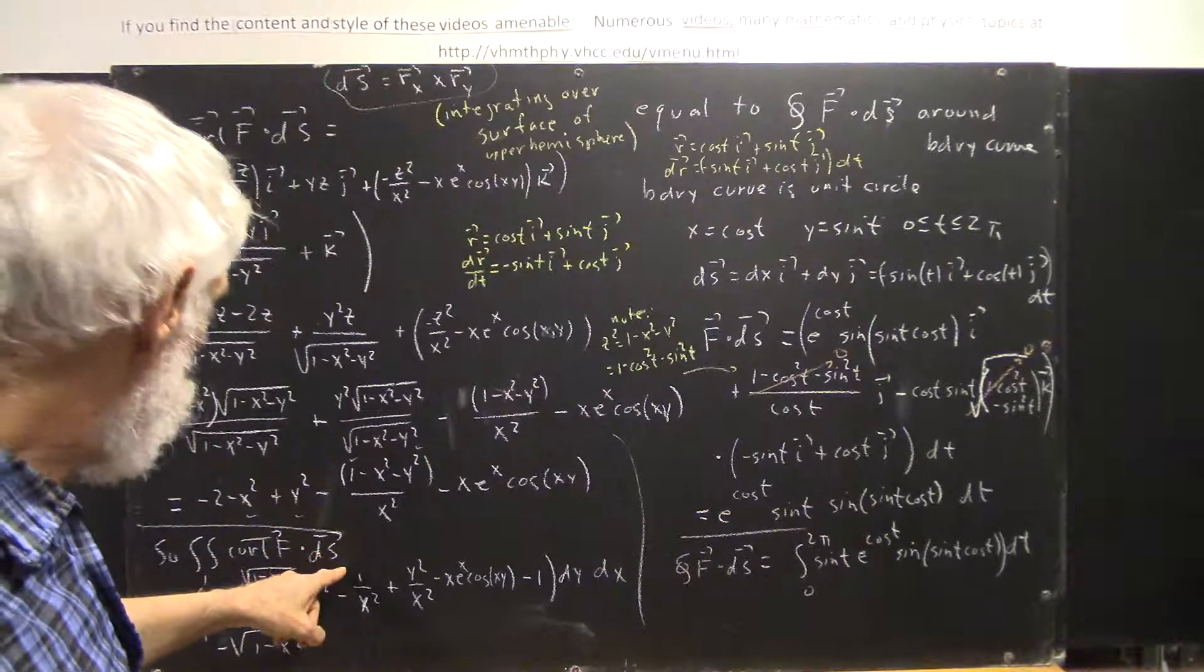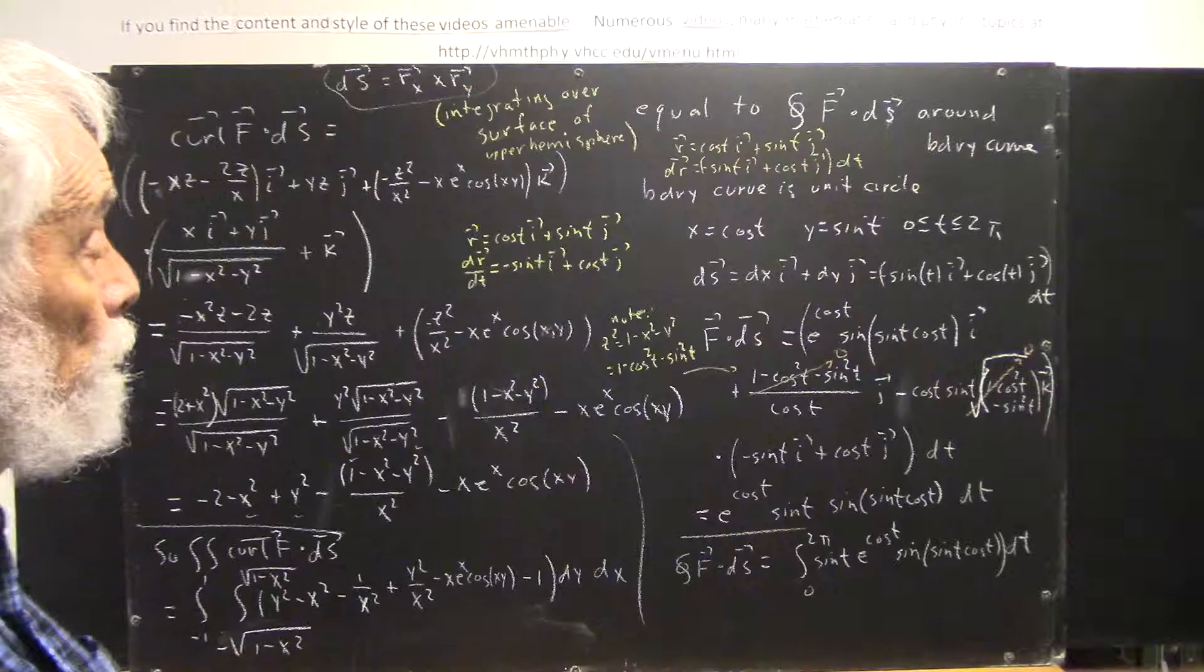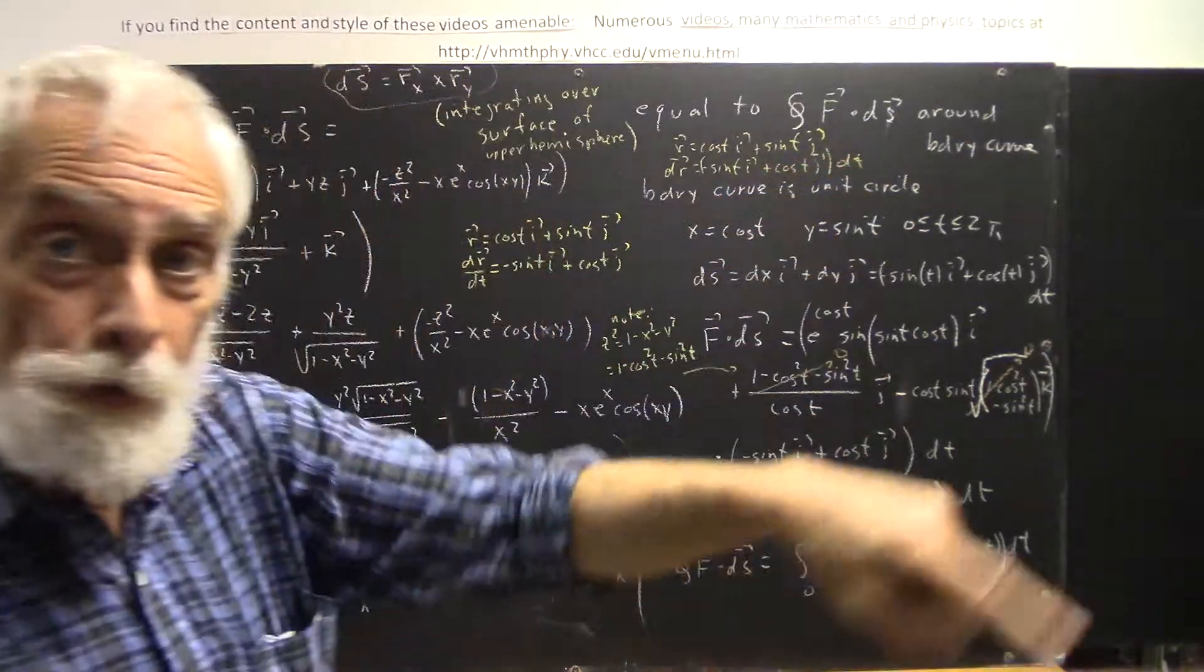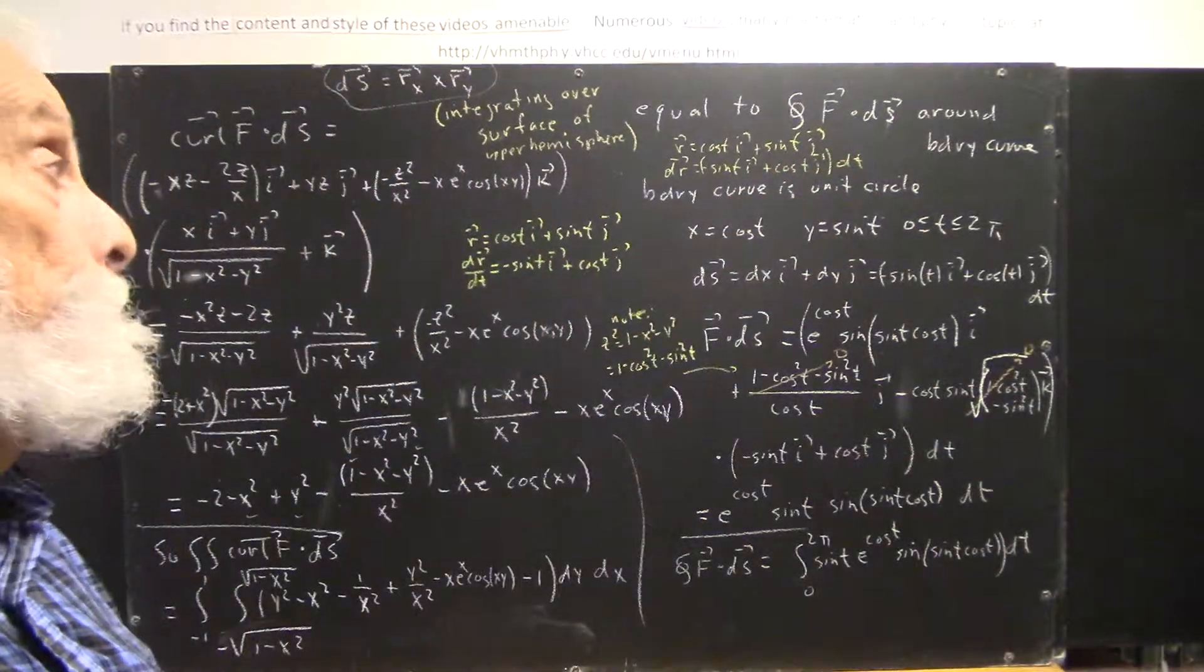Okay. So, just an example of the mechanics, again, of setting up a Stokes theorem integral, which sets the integral of the curl over the area, in this case the area of the hemisphere, equal to an integral around the boundary, in this case the unit circle.